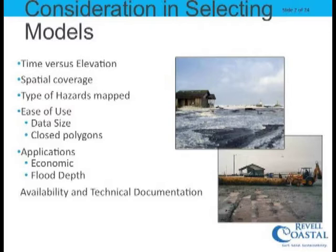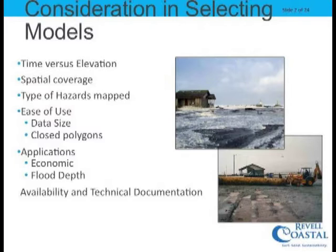What are the types of hazards? If we're talking about San Francisco Bay, we need to think about tides. For the open coast, we need to think about waves and wave run-up. How easy is the data to use? Do we have GIS polygons that are complete and easy to use, or is it a very cumbersome, huge dataset that's hard to process, like LIDAR, which is topography data? What are the applications — are we trying to do economics, vulnerability? Do we need to know flood depths or just an area?